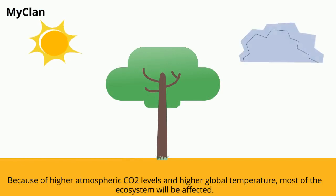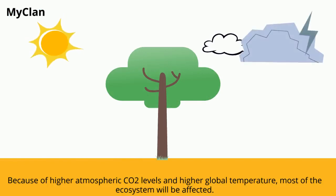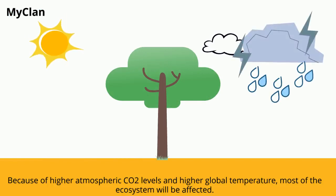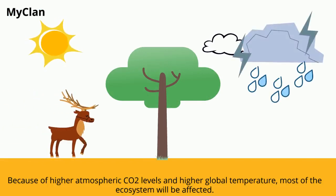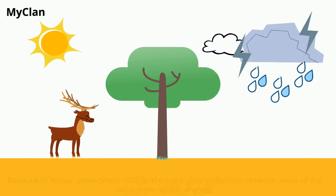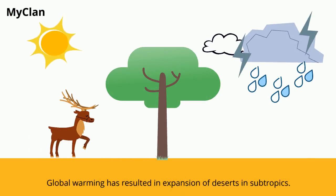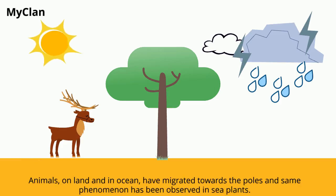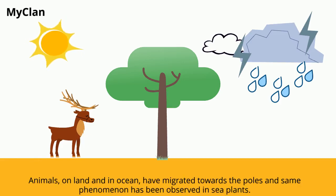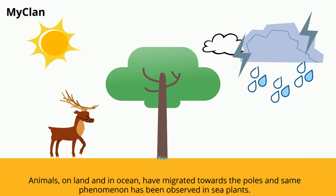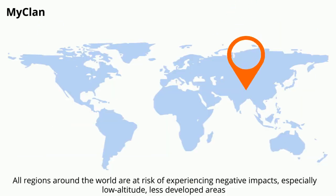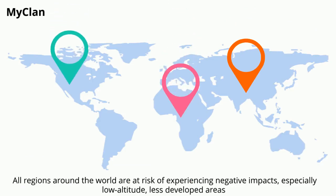Because of higher atmospheric CO2 levels and higher global temperatures, most ecosystems will be affected. Global warming has resulted in the expansion of deserts in the subtropics. Animals on land and in the ocean have migrated towards the poles, and the same phenomenon has been observed in sea plants. All regions around the world are at risk of experiencing negative impacts.